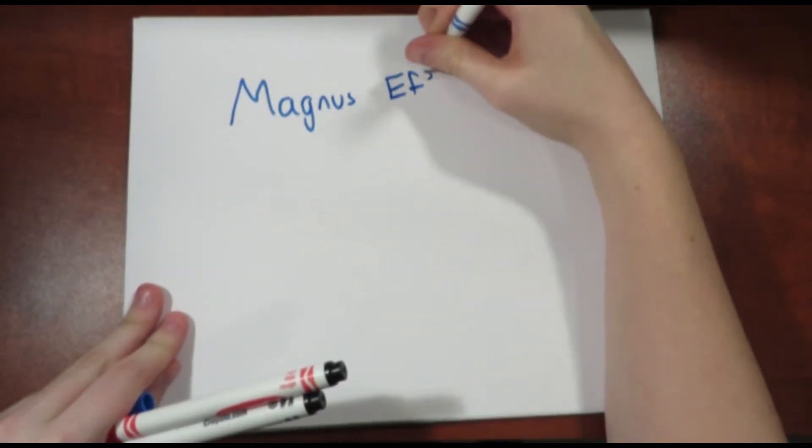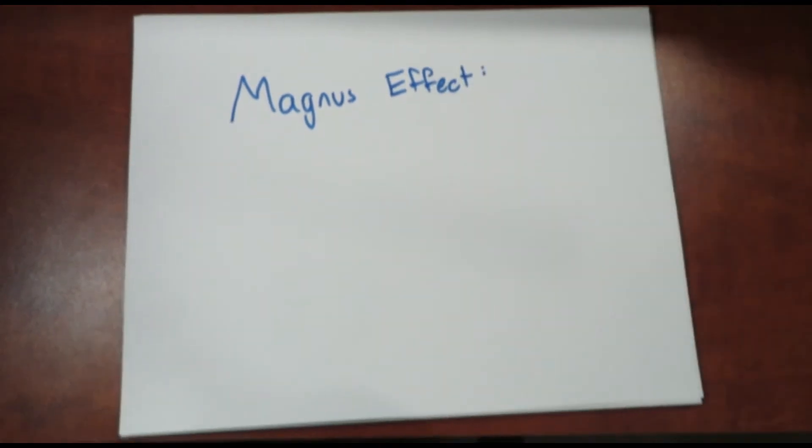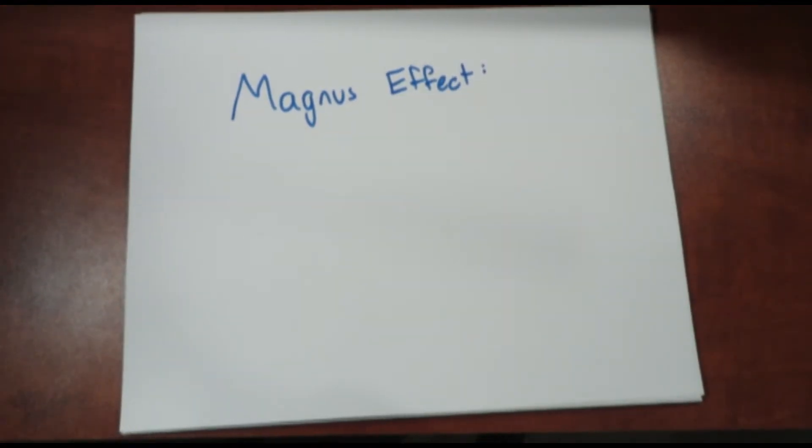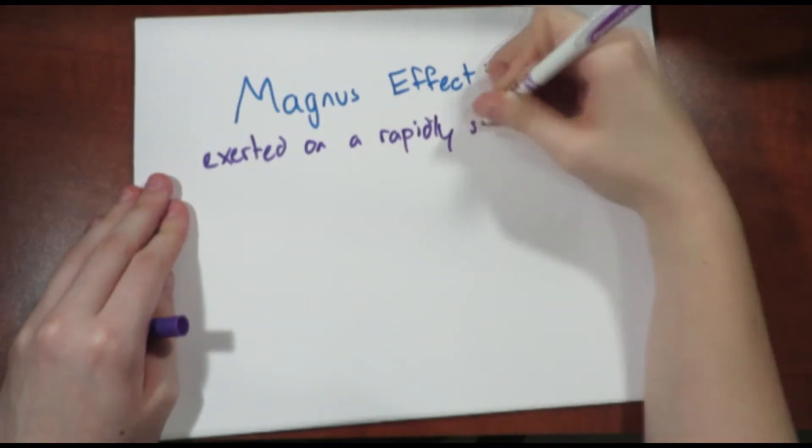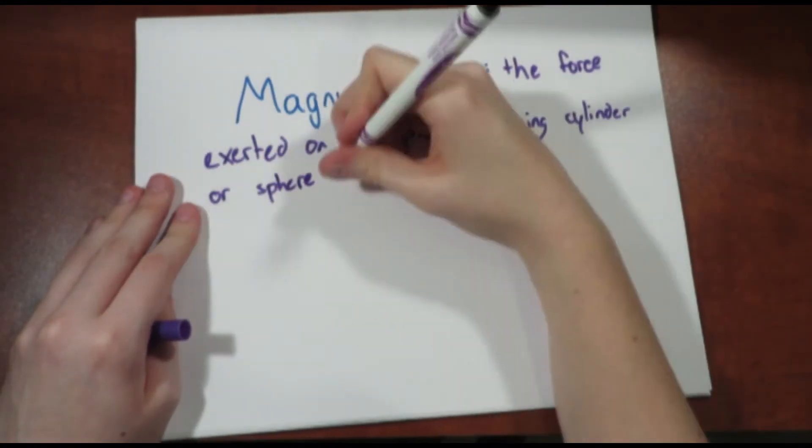If you've ever seen a batter jump out of the way of a baseball that ends up crossing over the plate, you've seen a good curveball. However, when a pitcher throws a curveball, do you have to throw it slower than you would a fastball?